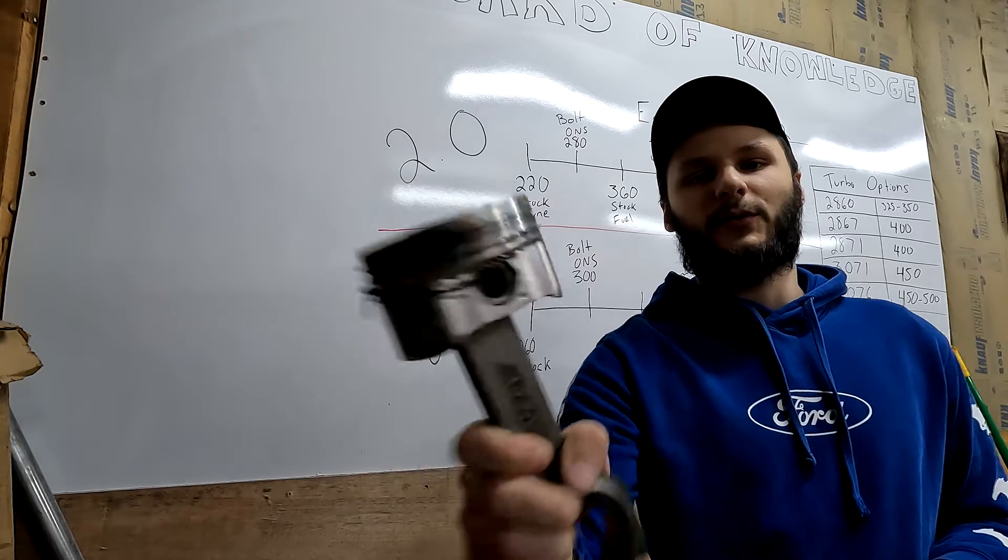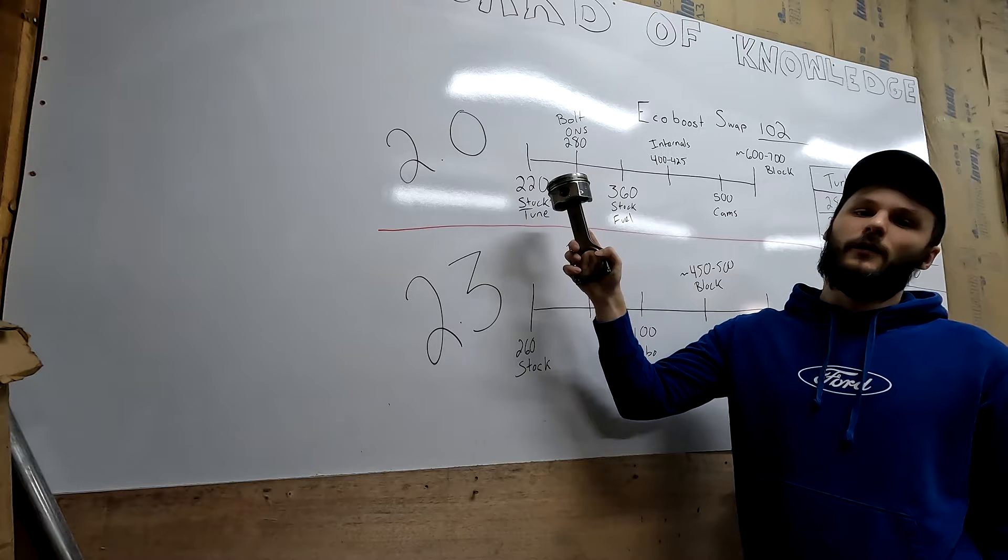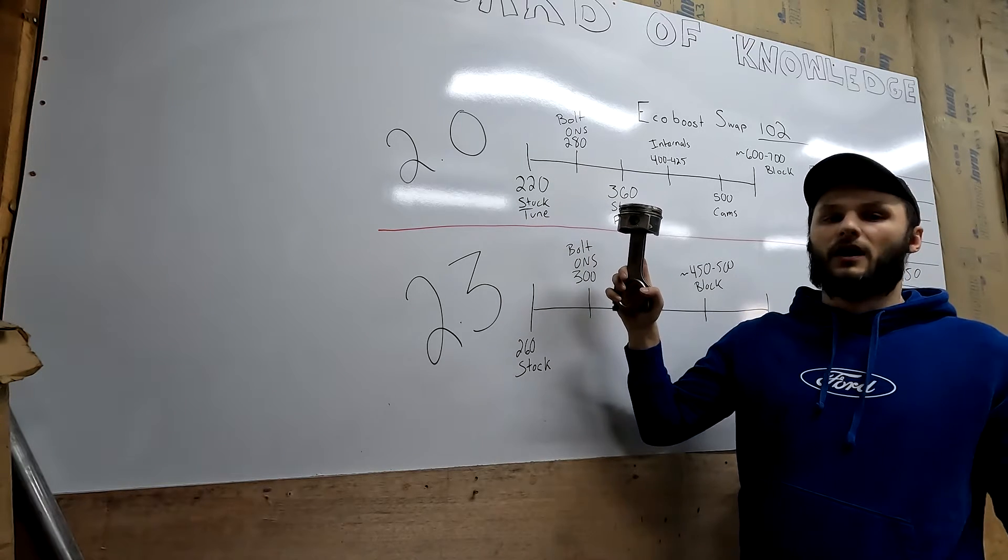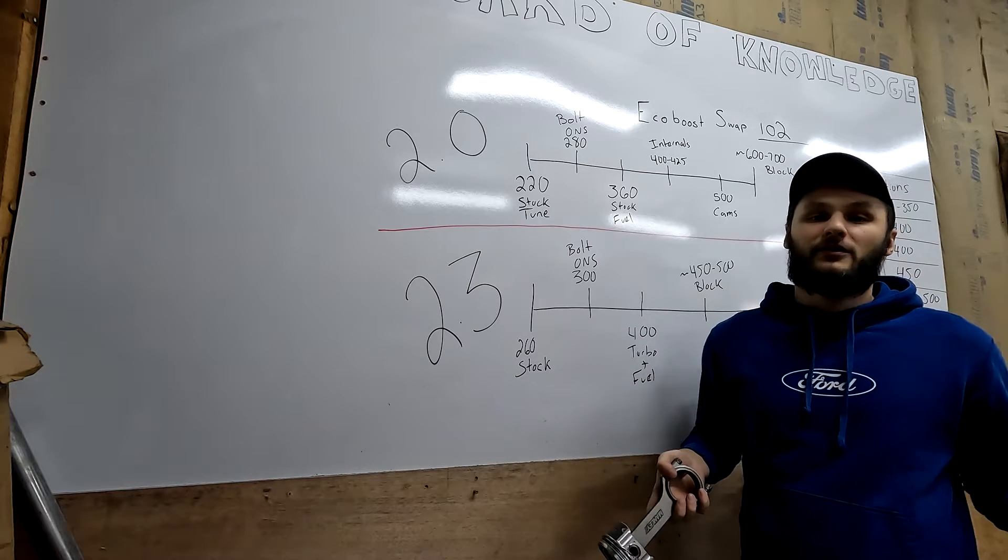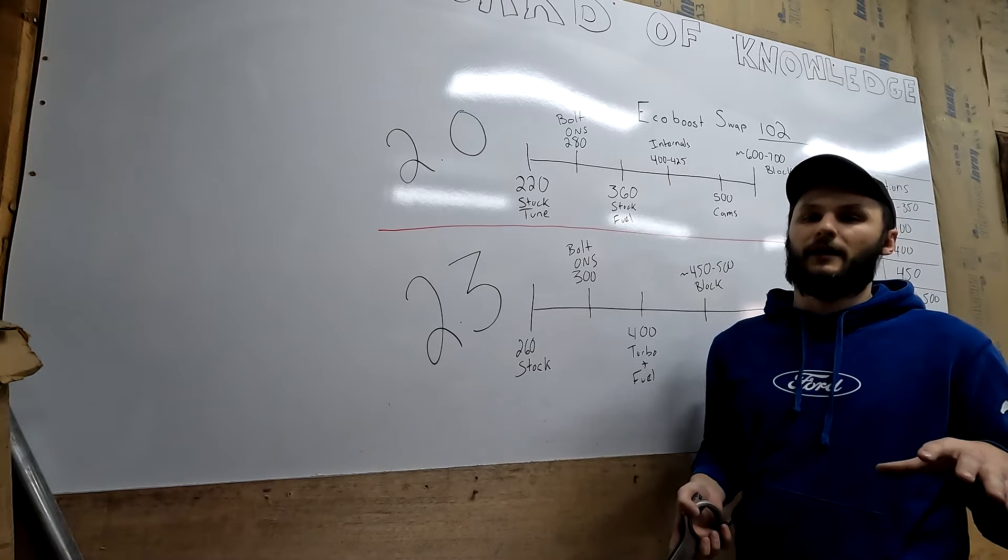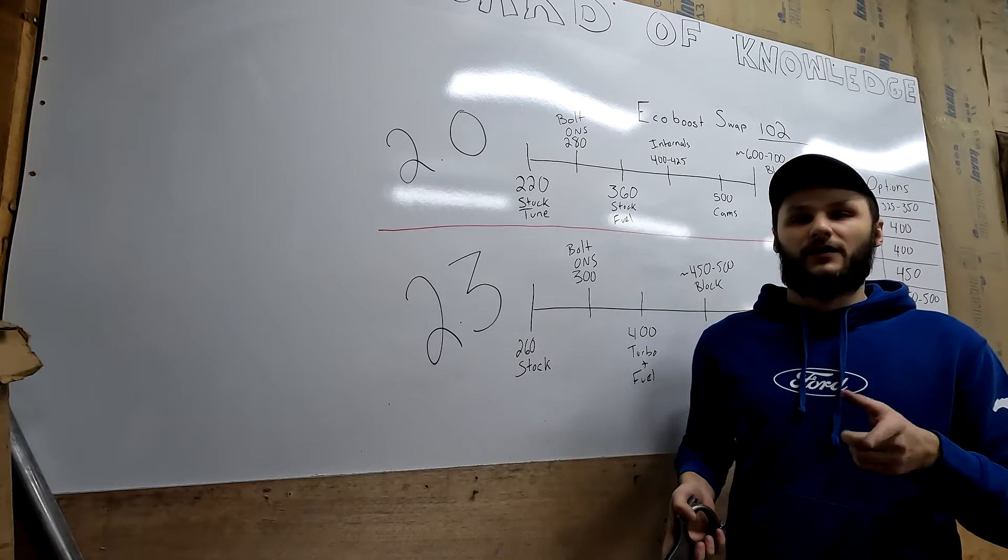The 2.0 in stock form with stock tune, all the stock bolt-on parts like the intake, exhaust, and everything, you can expect to make about 220 wheel horsepower. All these power numbers are rated at wheel, not crank. Crank's different and doesn't really matter because you might put down different numbers.